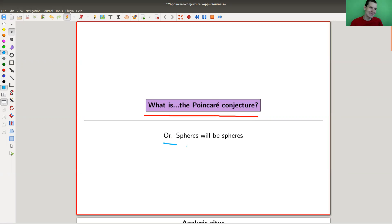Essentially the statement of the conjecture is that spheres will be spheres - if you see a sphere, it is a sphere. That's roughly what it is. Let's do some history and mathematics at the same time.